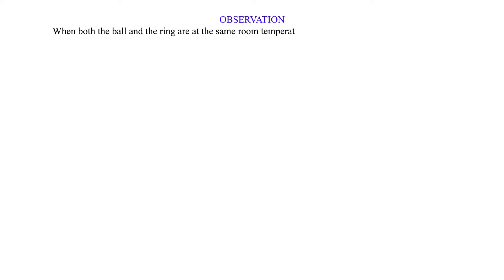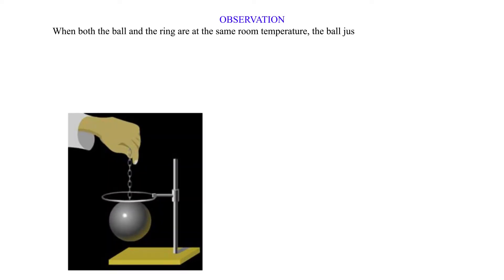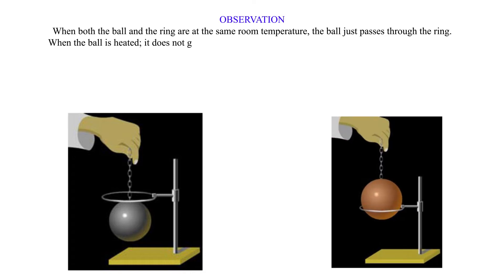Observation. When both the ball and the ring are at the same room temperature, the ball just passes through the ring. When the ball is heated, it does not go through the ring, but when left there for some time, it goes through.